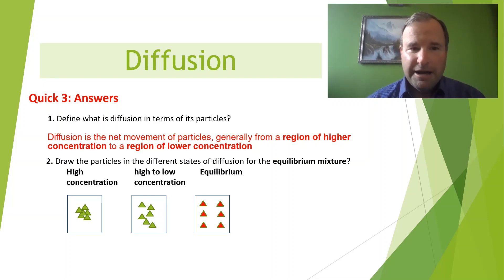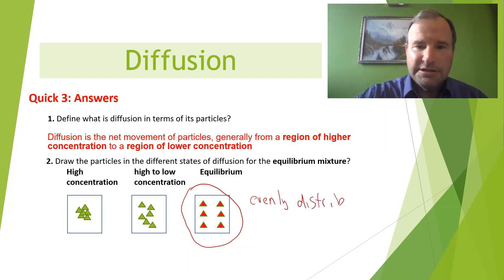Number two. Draw the particles in different states of diffusion for an equilibrium mixture. You can see here the equilibrium mixture has been drawn. I put it in red and you can see they're evenly distributed. So when you draw them, make sure they're evenly distributed and that suggests that everything has been mixed thoroughly. Well done if you got that drawing correct. Let's see. Look at the last one.